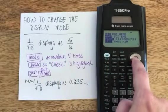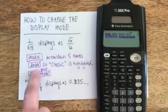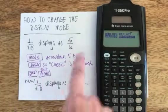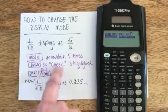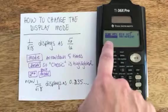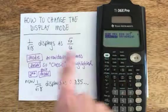One, two, three, four, five. And now I want the classic to be highlighted, which it is because it's blinking. I don't want math print. So now that classic is highlighted, I need to hit Enter so that it actually is the highlighted portion I want.